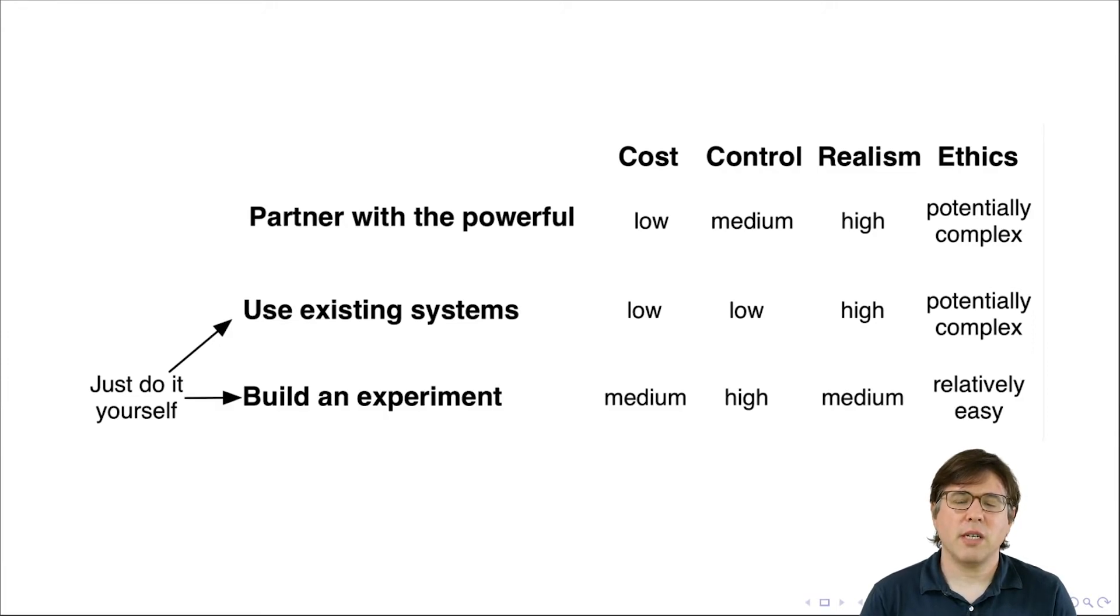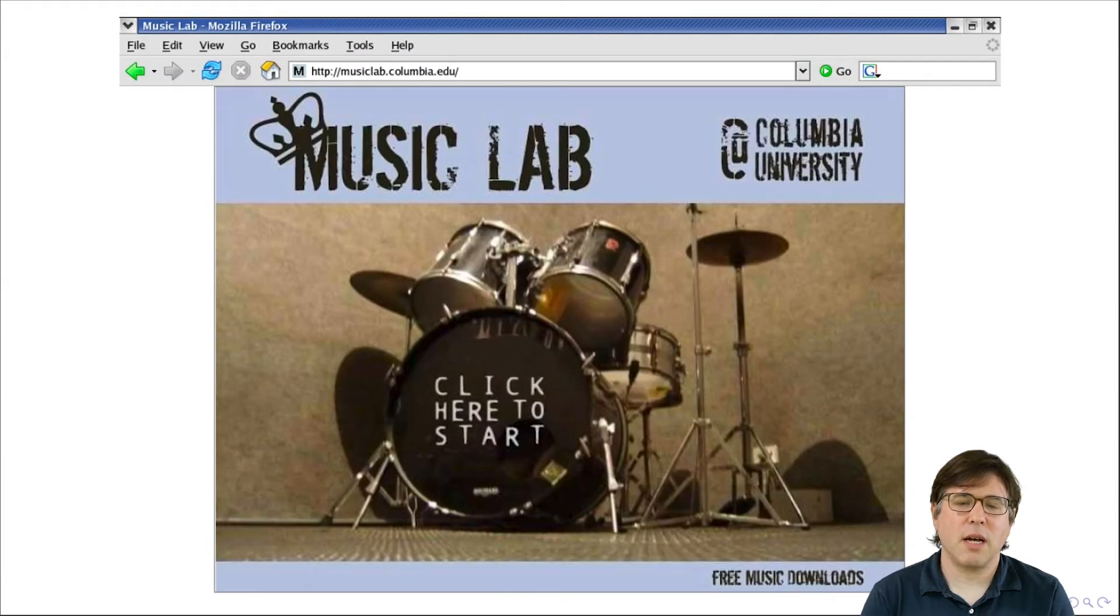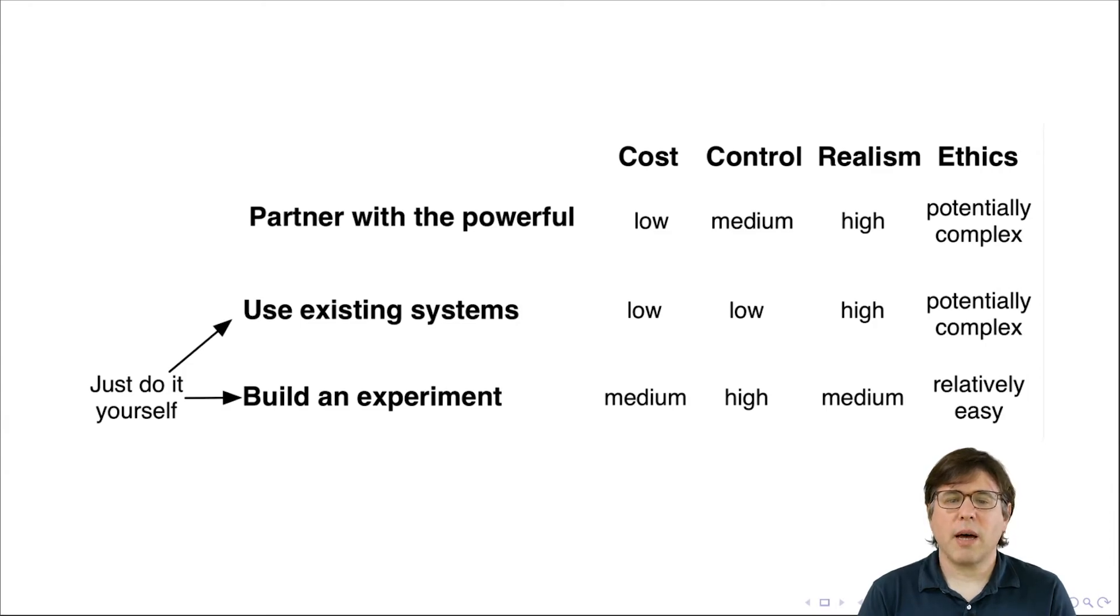The next strategy is to build your own experiment. And so let me give you an example of this. This is Music Lab. This is my dissertation research. I'll talk about this in more detail in the next video. But in this research, we built a website where people could come and download new music, but we could control the information they had about the behavior of other people.